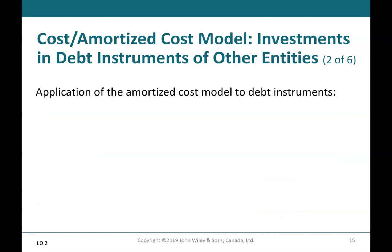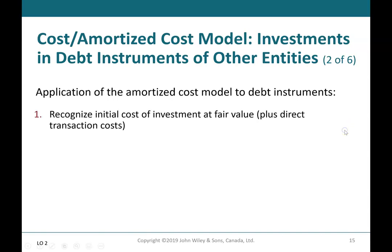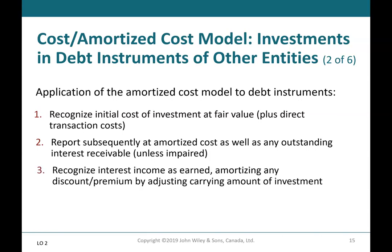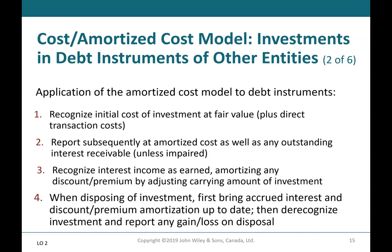Cost/amortized cost model — investments in debt instruments, Part 2 of 6. Application of the amortized cost model: recognize initial cost at fair value plus direct transaction costs; report subsequently at amortized cost as well as any outstanding interest receivable, unless impaired; recognize interest income as earned, amortizing any discount or premium by adjusting the carrying amount of the investment. When disposing of the investment, first bring accrued interest and discount/premium amortization up to date, then de-recognize the investment and report any gain or loss on disposal.